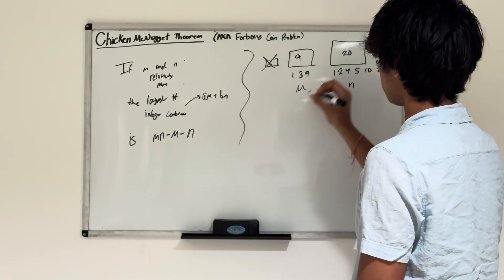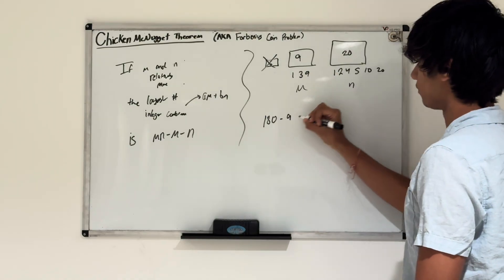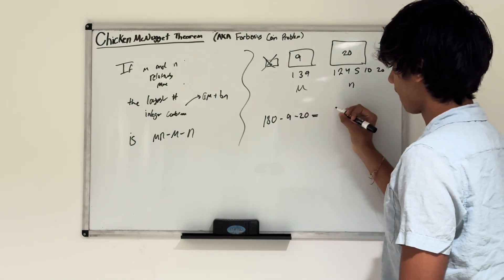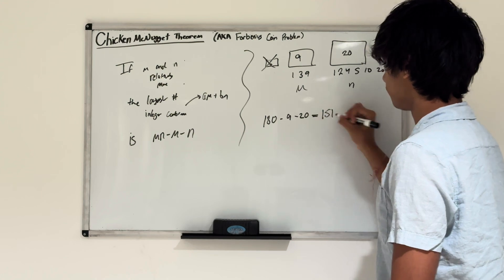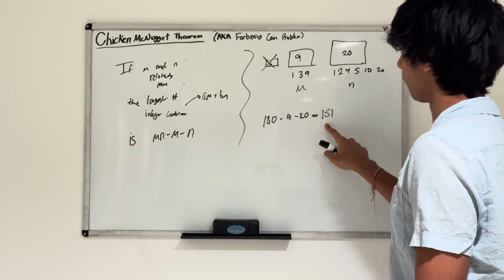9 times 20 is 180, minus m which is 9, minus n which is 20. So 180 minus 9 minus 20 equals 151. The largest number of chicken McNuggets we can't buy using 9 and 20 boxes is 151.